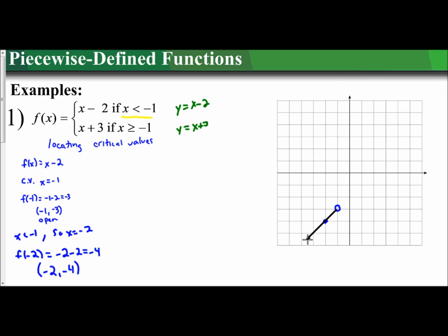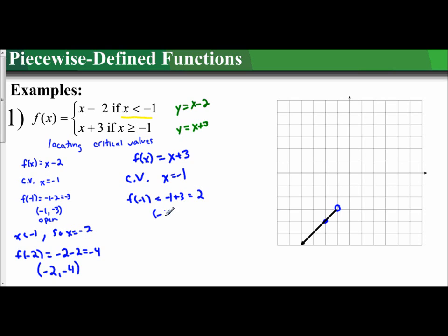I repeat the same process with f of x equals x plus 3. The critical value is also based off of x equals negative 1, so I plug negative 1 into the function: negative 1 plus 3 equals 2, giving the coordinate negative 1, 2. Since this function uses greater than or equal to, we have a closed circle at that point, negative 1, 2.